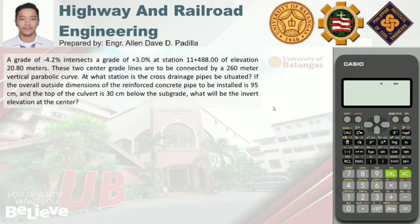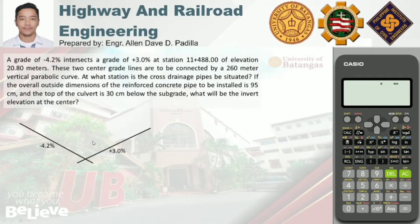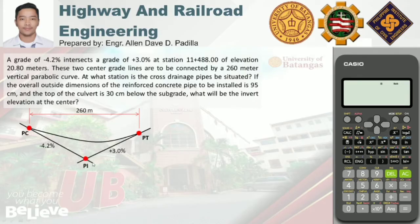First, let's convert the worded problem into an illustration. We have a negative 4.2 percent back tangent that intersects a positive 3.0 percent forward tangent, so the curve created is a parabolic sag curve — the curve opens upward. The length is 260 meters, with PC, PT, and the point of intersection. The PI is at station 11 plus 488, elevation 20.8 meters. The cross drainage pipe is located at the lowest point, so we are looking for the stationing of the lowest point.